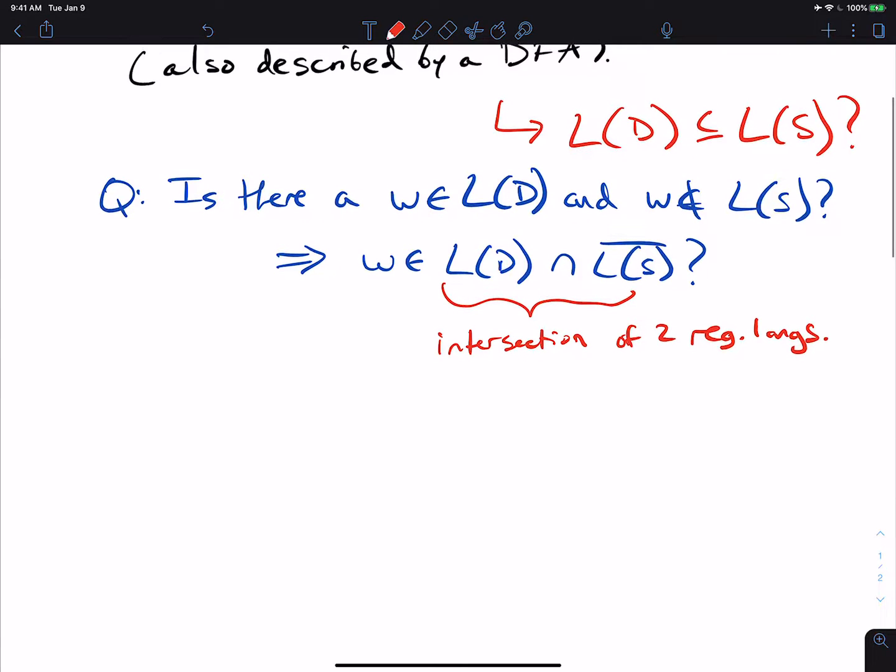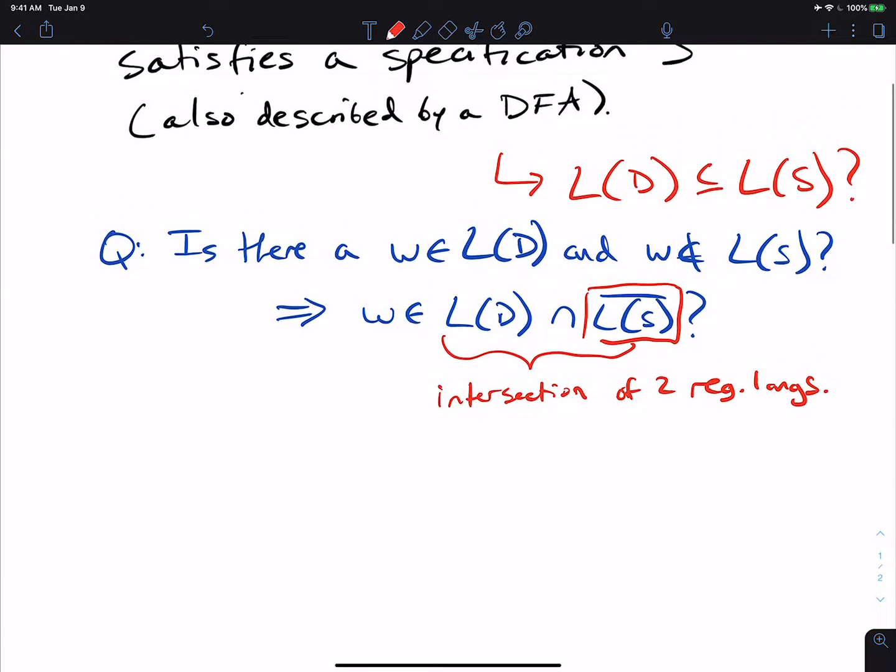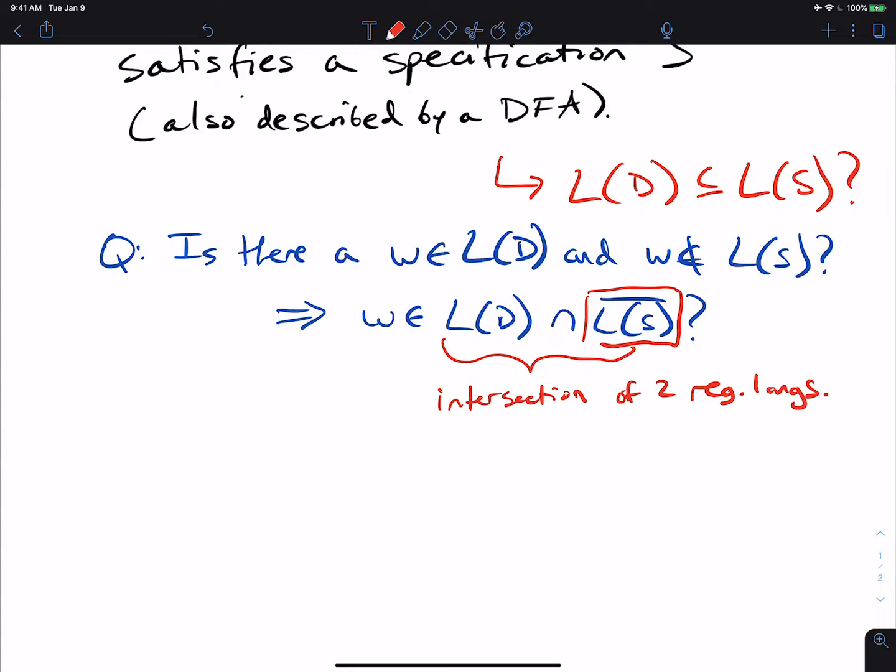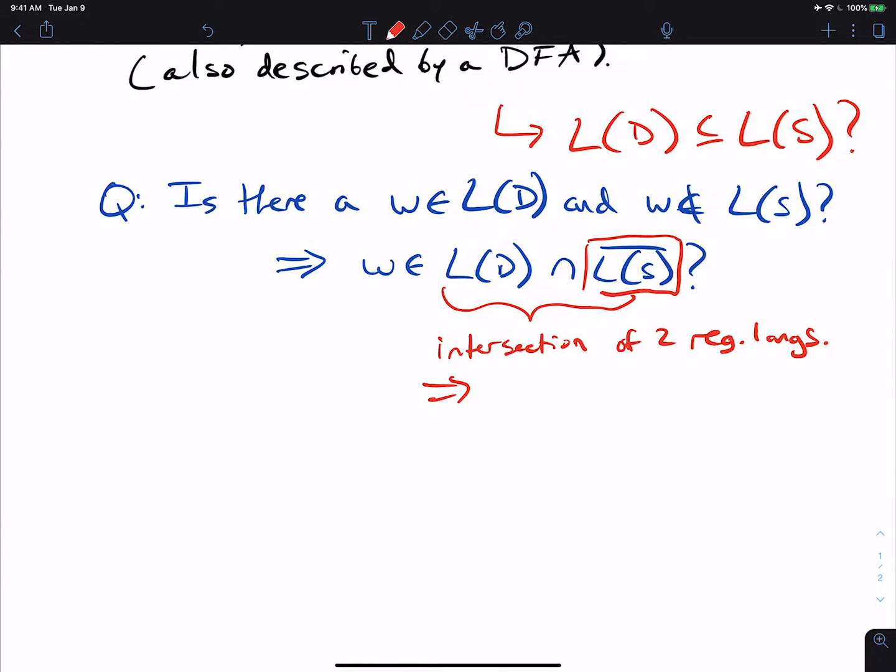So, and also the complement of L of S, well, regular languages are closed under complement. So therefore, L of S complement is also regular. So therefore, we get intersection of two regular languages. So this is regular.